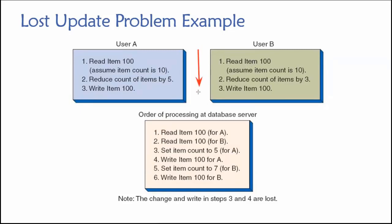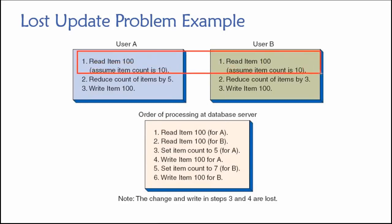Before either of these transactions runs, we have 10 units of item 100 in inventory. Time is flowing from top to bottom — time one, time two, time three — and time zero is the state of the database before any of these things run. Both users at the same time request the number of units in inventory for item 100. Let's say these are two salespeople both selling item 100 at the same time — when we begin, the item count is 10.